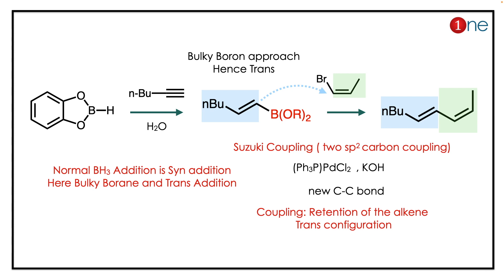Next, you are attacking the bromine, so it's a kind of coupling reaction. The important fact here is the retention of configuration of the alkene which is in the bromide form. So you have a conjugated diene with retention of configuration. The reaction is technically called Suzuki coupling — you are using palladium as the metal catalyst to form a new C–C bond, basically coupling two sp2 carbons.